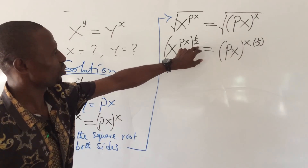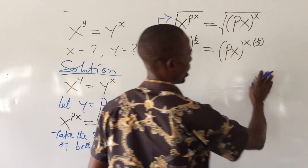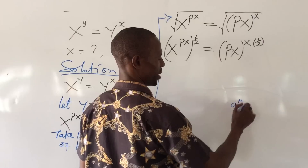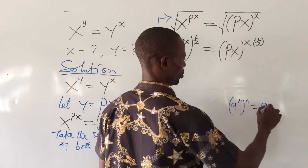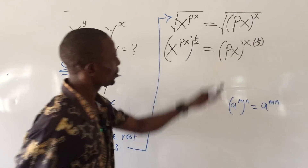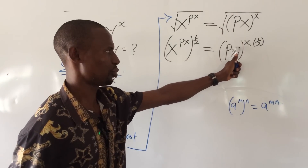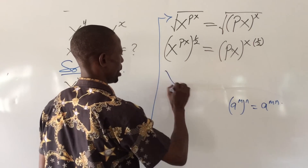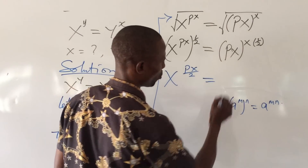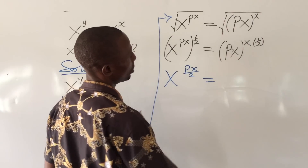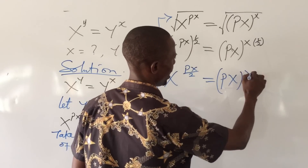Now, what if I decide to use the power to open this bracket according to the law of indices, which says that if you have a to the power of m, then bracket n, this is the same as a to the power of m times n. So applying this, we get x to the power of px over 2 equal to px to the power of x over 2.